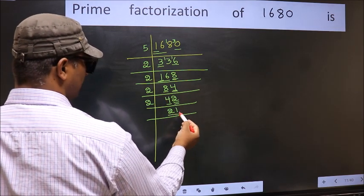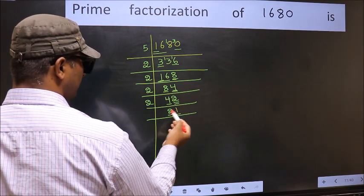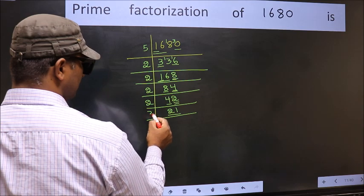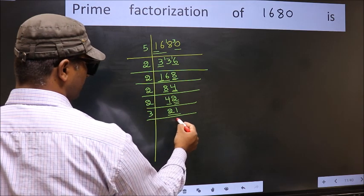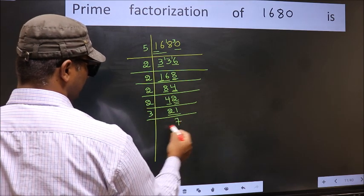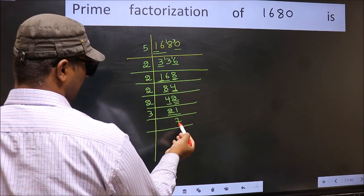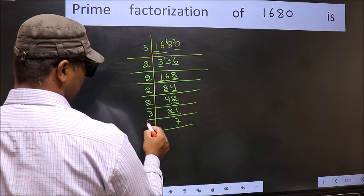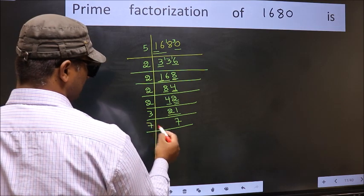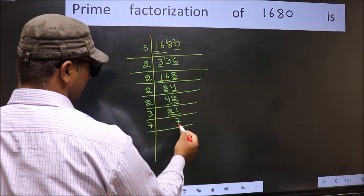Now here we have 21. 21 is 3×7. Now we have 7. 7 is a prime number, so 7×1=7.